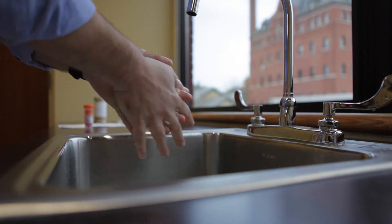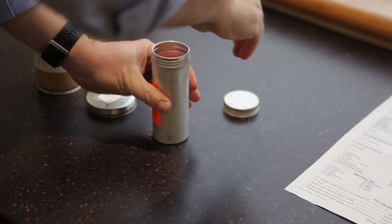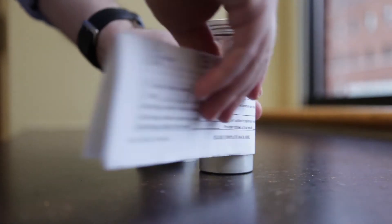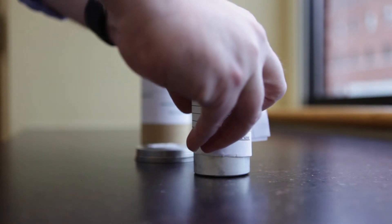Then wash your hands. Put the plastic vial into the metal canister. Wrap the form around the metal canister and put both in the cardboard container.